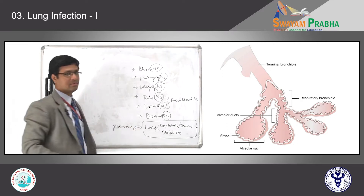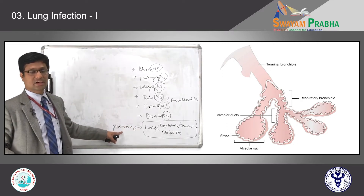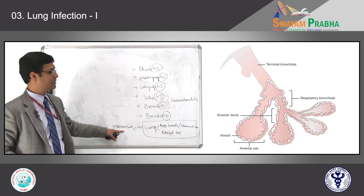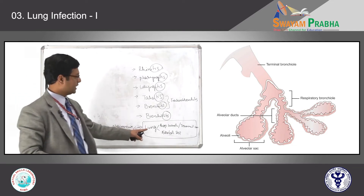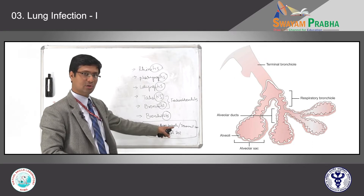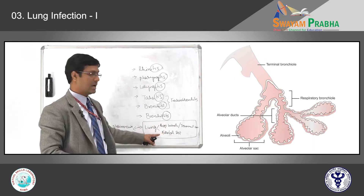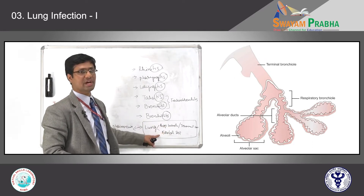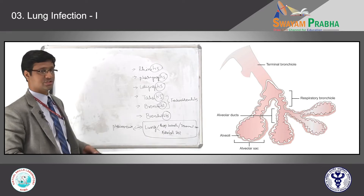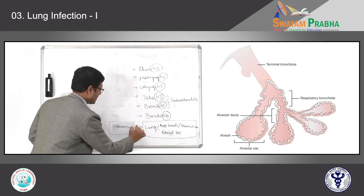Hence, pneumonia is nothing but inflammation of the lung parenchyma, predominantly limited to the respiratory bronchioles, terminal bronchioles, and alveolar sac. In today's lecture, we will be talking about pneumonia.